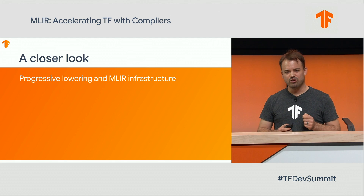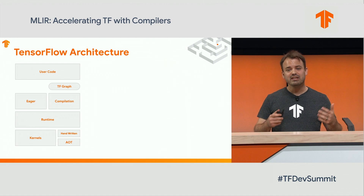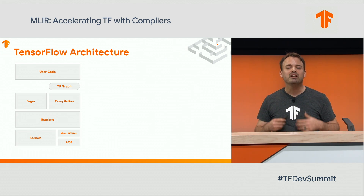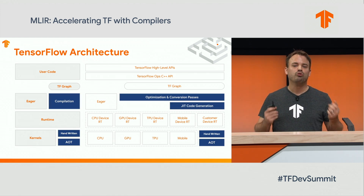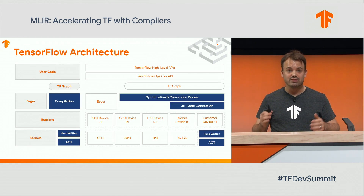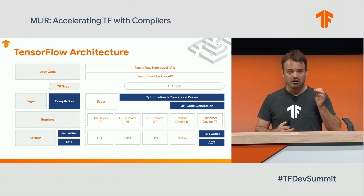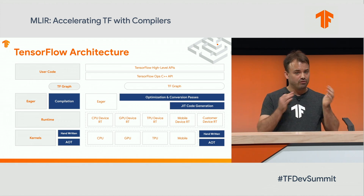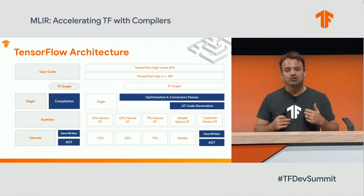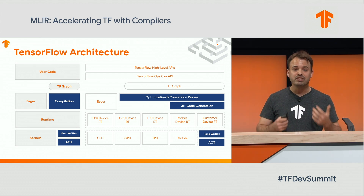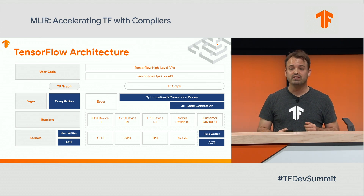Let's take a closer look at MLIR, the progressive lowering, and the infrastructure around MLIR. You've seen the TensorFlow architecture before, and if we zoom in a little bit we can expand the different components. Focusing on the part where MLIR will be used: a lot of this is the graph representation and optimization format for TensorFlow models, but also particularly in compilation — optimization and conversion passes between different frameworks, JIT compilation of modules, as well as writing and generating AOT kernels and exploiting handwritten kernels. MLIR will be involved in all of these different parts.